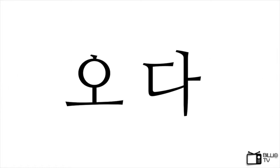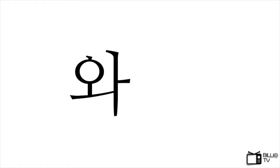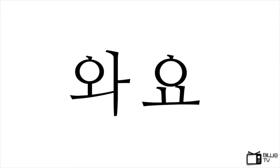The next one is ODA, which means 'to come.' The vowel is O. Let's cut off DA first. In this case, the vowel O becomes WA. And we put YO next to the changed letter. So ODA becomes WAYO.